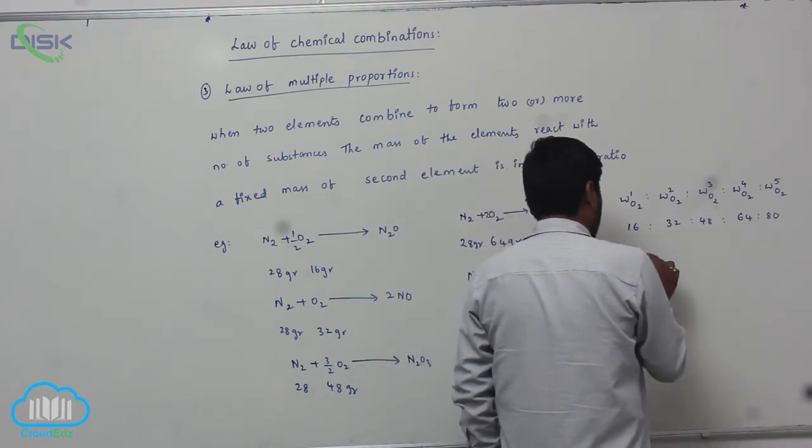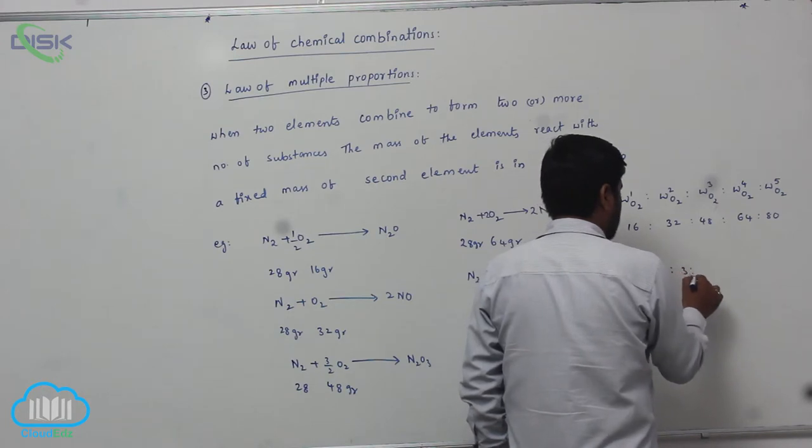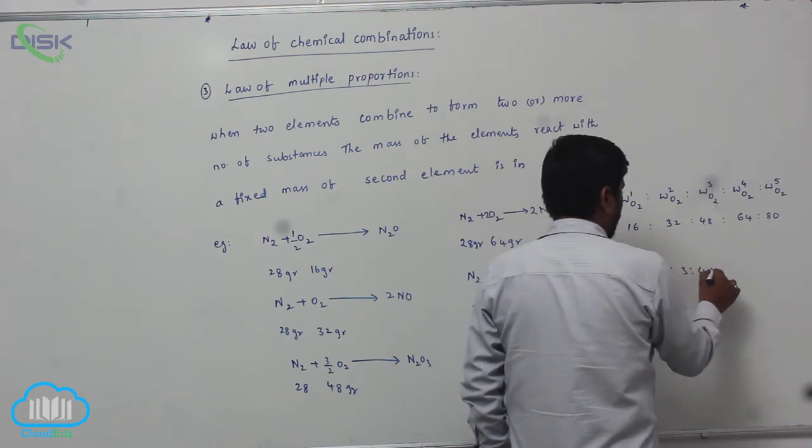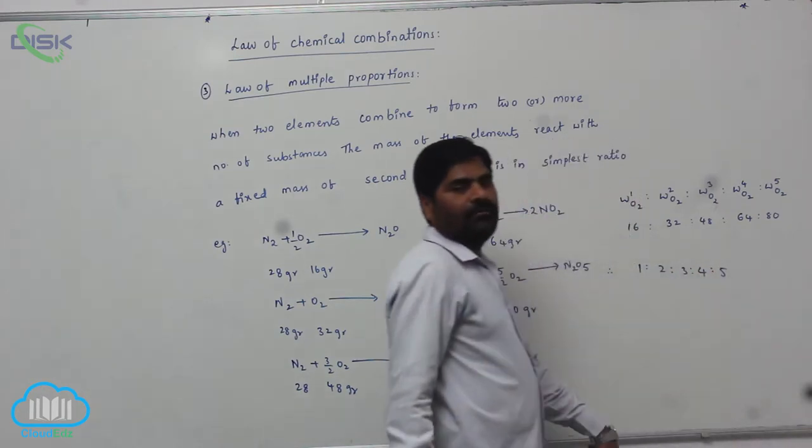The simplest ratio of oxygen in all the compounds is 1 : 2 : 3 : 4 : 5. This illustrates the Law of Multiple Proportions.